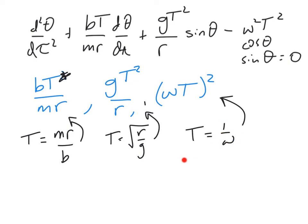These are all three different values of capital T. And it doesn't matter which I choose. This is all algebraic manipulation. But I can just choose one of them arbitrarily and say, I want to define capital T to be one of these things. And that will eliminate one of these groups.